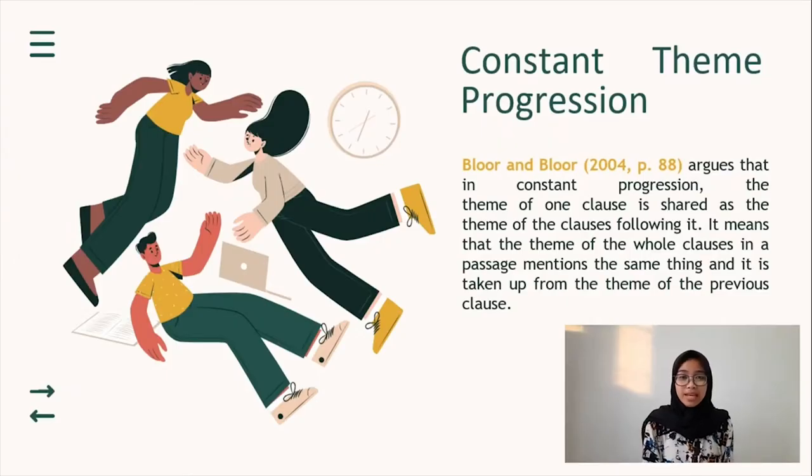Hello, I'm Elsa. So now I'm going to explain about constant theme progression. According to Blur and Blur 2004, in constant progression, the theme of one clause is shared as the theme of the clauses following it. It means that the theme of the whole clauses in the passage mentions the same thing and it's taken up from the theme of the previous clauses.